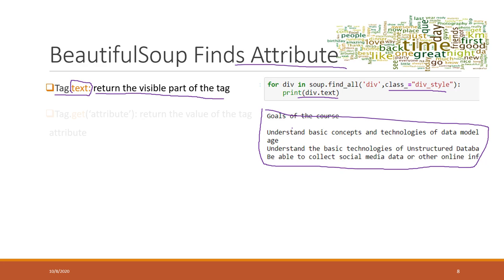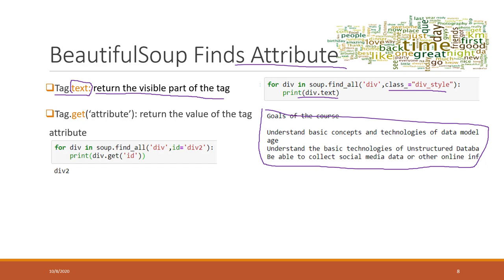Sometimes if we want to get an attribute — such as a URL or an ID — we can also use the get() function. The syntax is: find the tag first, then call tag.get() with the attribute name in parentheses, and it will return the attribute value. It works like the dictionary .get() function in Python.